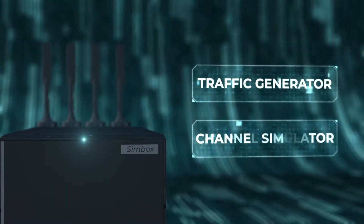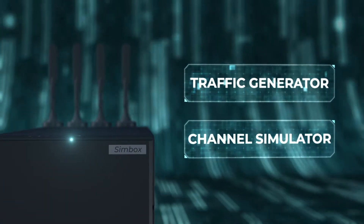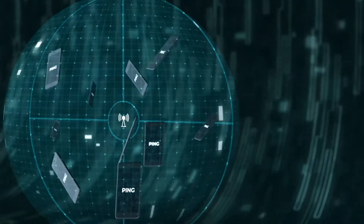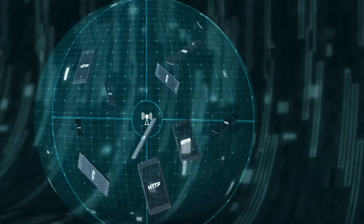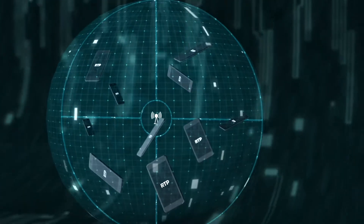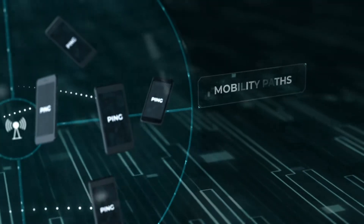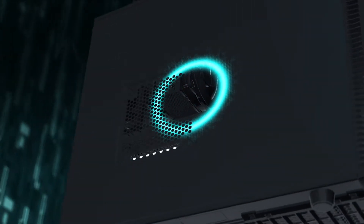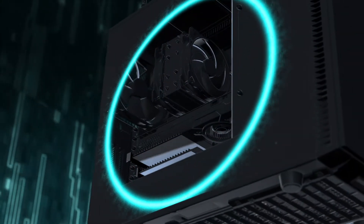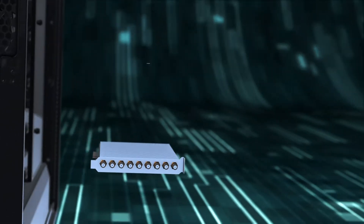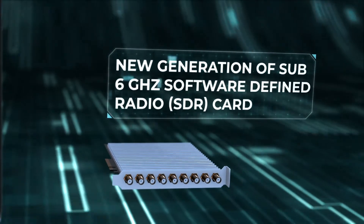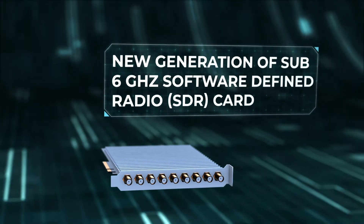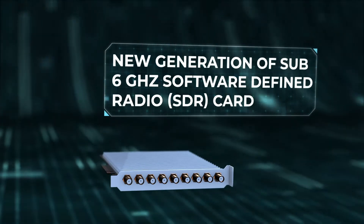The offer is completed by a traffic generator and a channel simulator, allowing you to generate different types of traffic and emulate 3GPP channel models and mobility paths. With its new generation of sub-6GHz SDR card, you can connect UEs across multiple 20MHz 4G cells and 100MHz 5G cells.